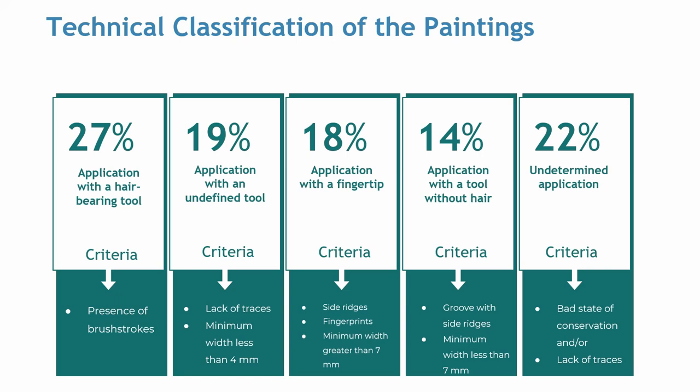The comparison between experimental and field results allows us to propose at least four technical groups regarding the application techniques of rock paintings. The first group is characterized by application with a hair-bearing tool, identified by brush stroke marks. The second group is related to application using undefined tools, inferred because of lack of traces and a minimum width less than or equal to 4 mm. The third kind is application with a fingertip, showing lateral reaches and/or fingerprints. The fourth kind is application with a tool without hair, bearing a groove with side reaches and a minimum width less than 7 mm — the minimum average for fingertip application. The remaining paintings, which could not be classified in the above categories, were recorded as undetermined.